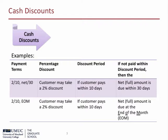Let's review two cash discount examples. First, the terms 2-10 net-30 means that a buyer can take a 2% discount if the invoice is paid within 10 days of the invoice date. If the buyer fails to pay the invoice within 10 days, then the full net amount of the invoice is due within 30 days. The next example is 2-10 EOM, which means end of month. Thus, the buyer may take a 2% discount if the invoice is paid within 10 days of the invoice date. Otherwise, the net or full amount is due at the end of the month.